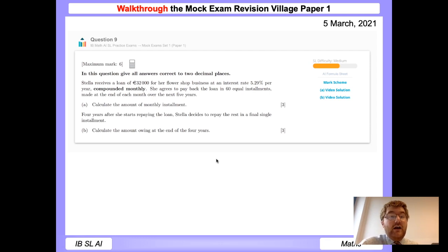Okay, and now we're going to look at question nine, which is a loan question. So you should always read the question and consider what we're going to do. So Stella receives a loan of 32,000 euros for a flower shop business, an interest rate of 5.29% per year, compounded monthly. I've noticed on AISL, they generally put the compounding in bold, getting you to think about what you're going to put into your GDC. She agrees to pay back the loan in 60 equal instalments made at the end of each month over the next five years. So we need to consider the end of each month over five years in 60 instalments. So underlining the key parts of information here. And we need to work out the amount of the monthly instalment.